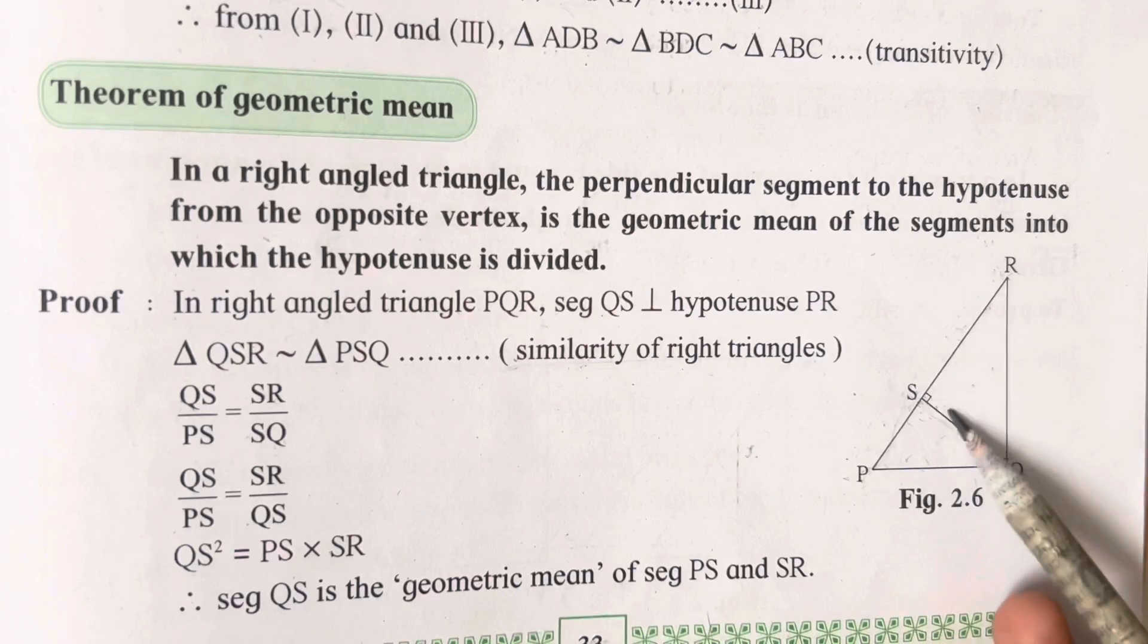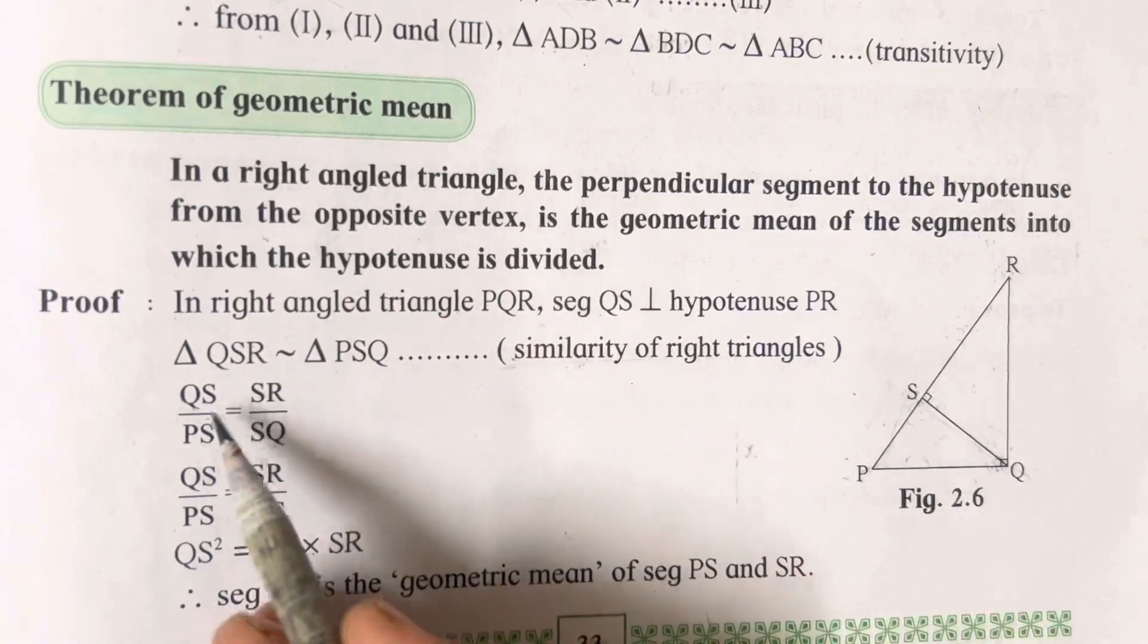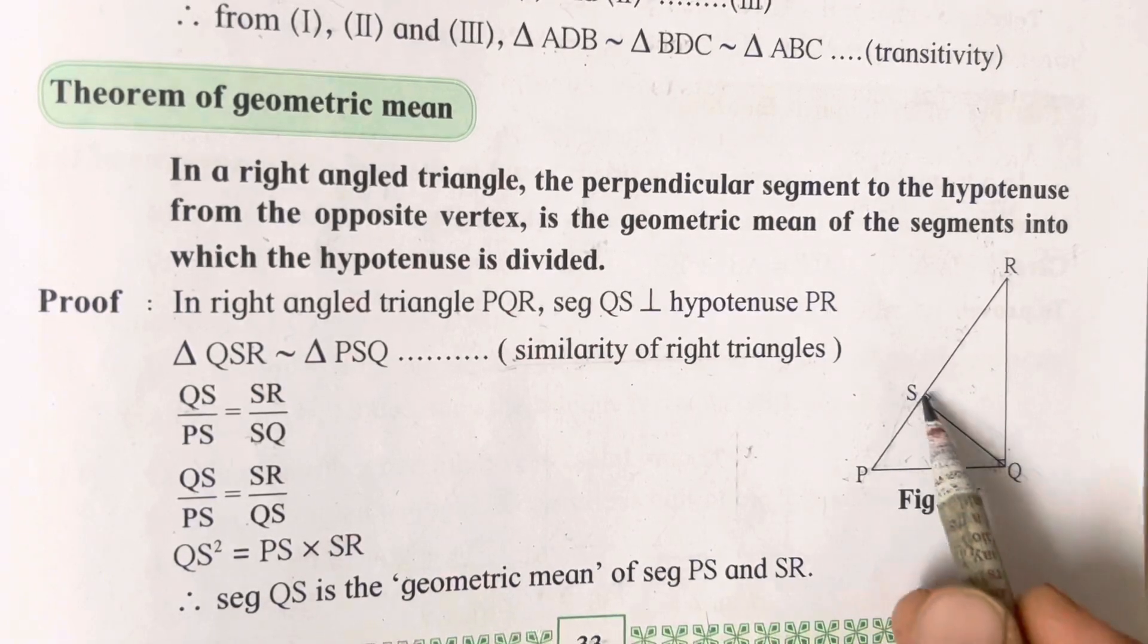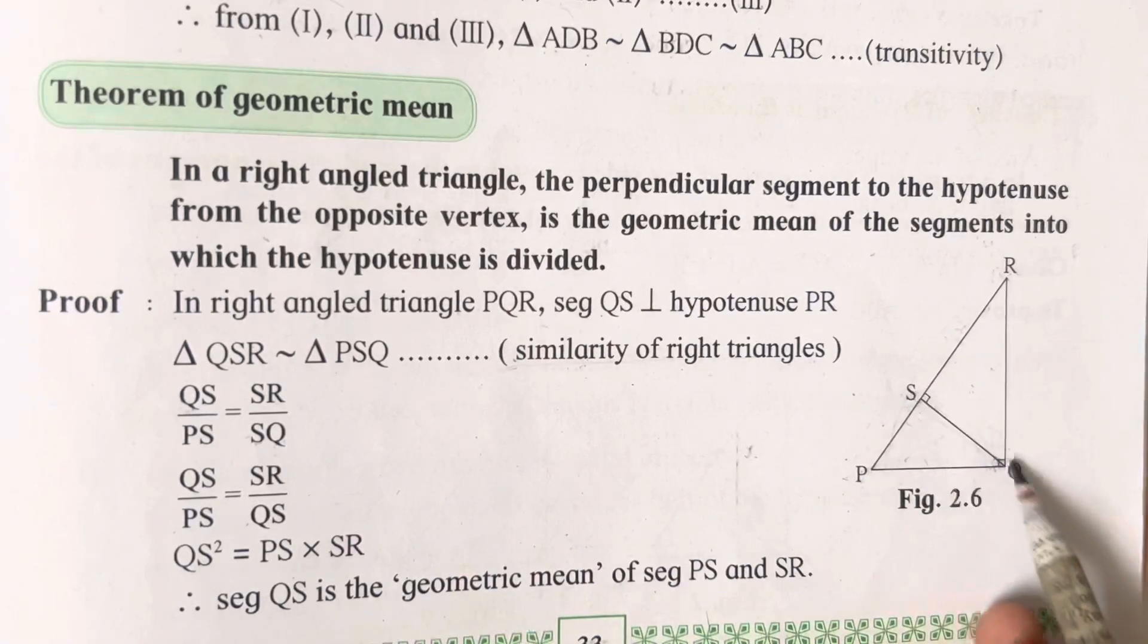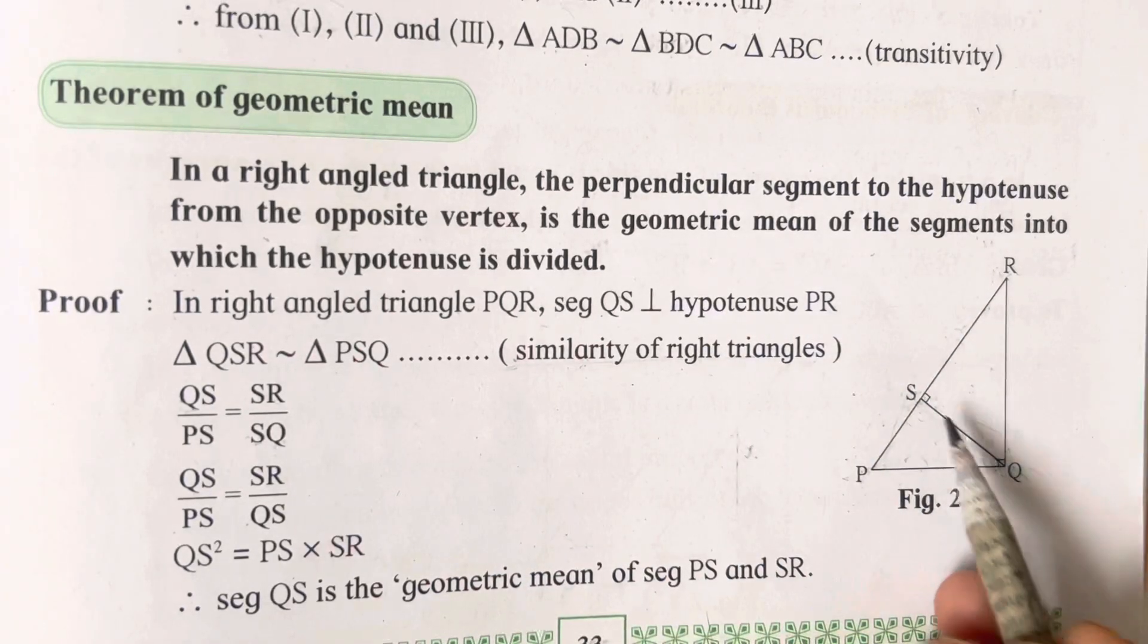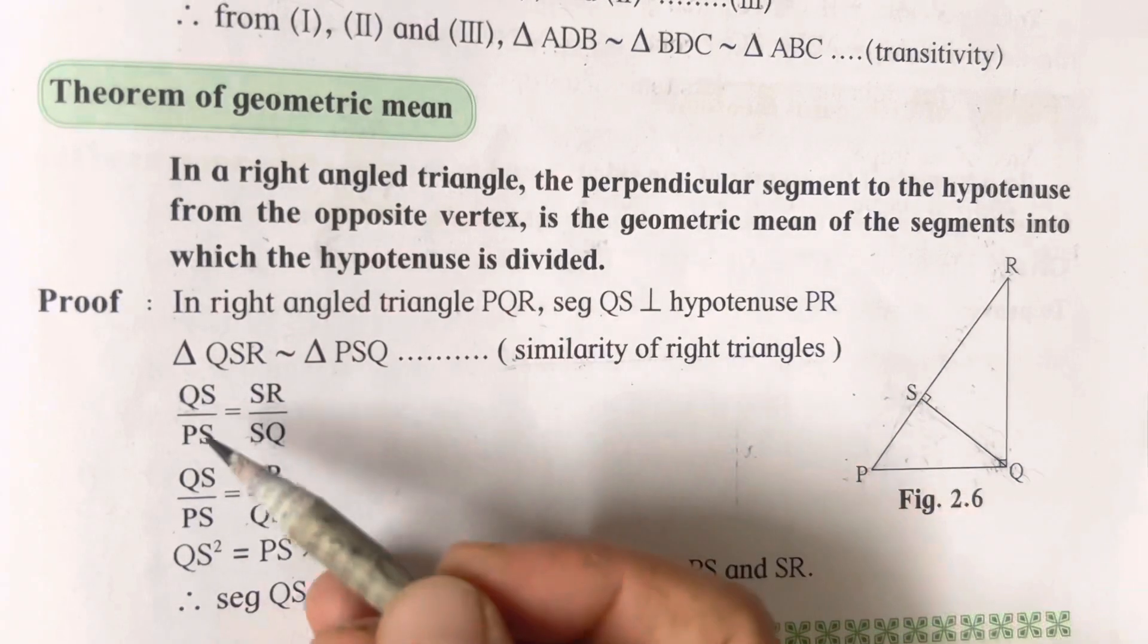This is the similar line for both the triangles. Therefore QS and SQ have come similar. So QS upon PS equals SQ upon SR. Directly you can write QS or SQ also, no problem.